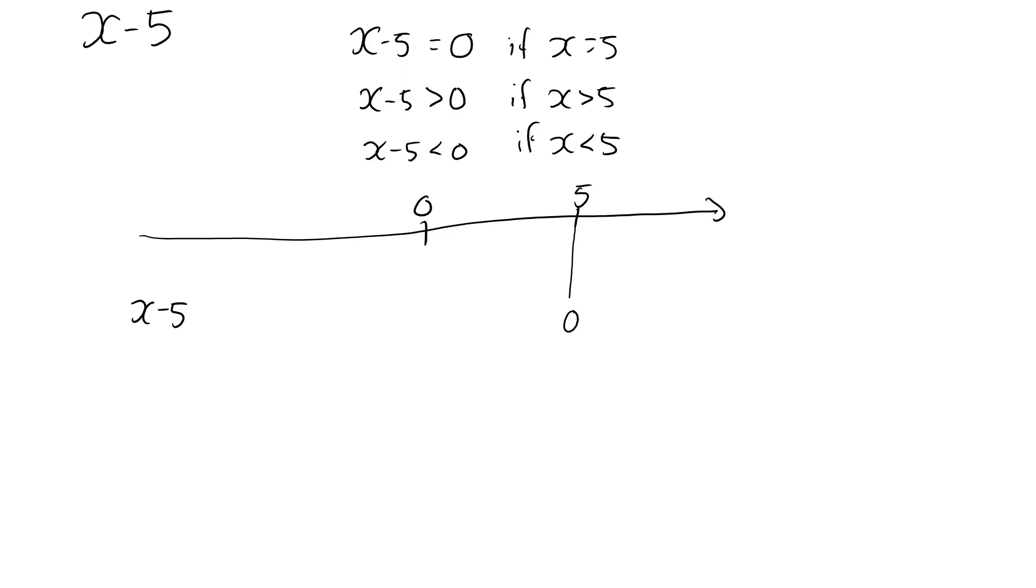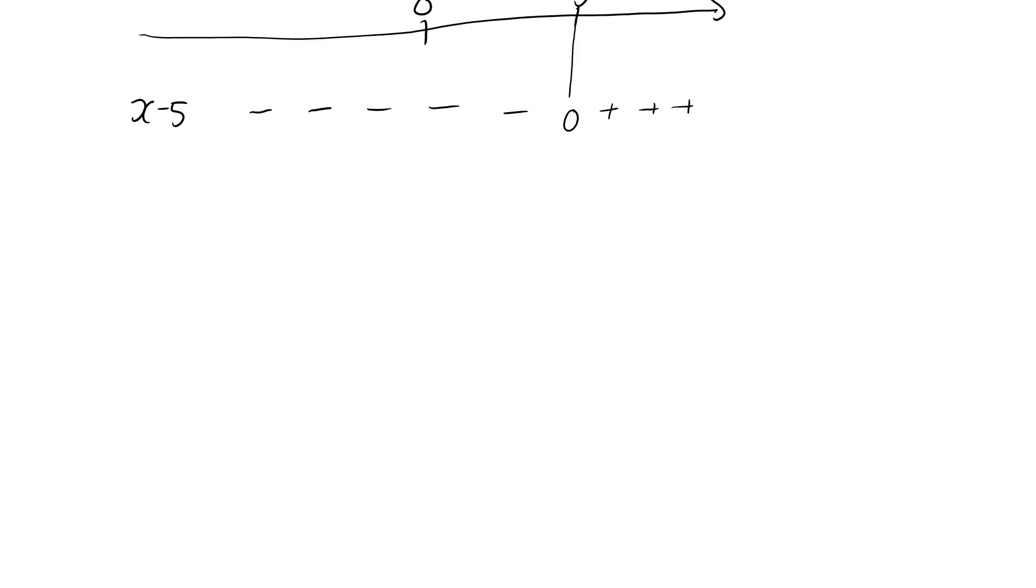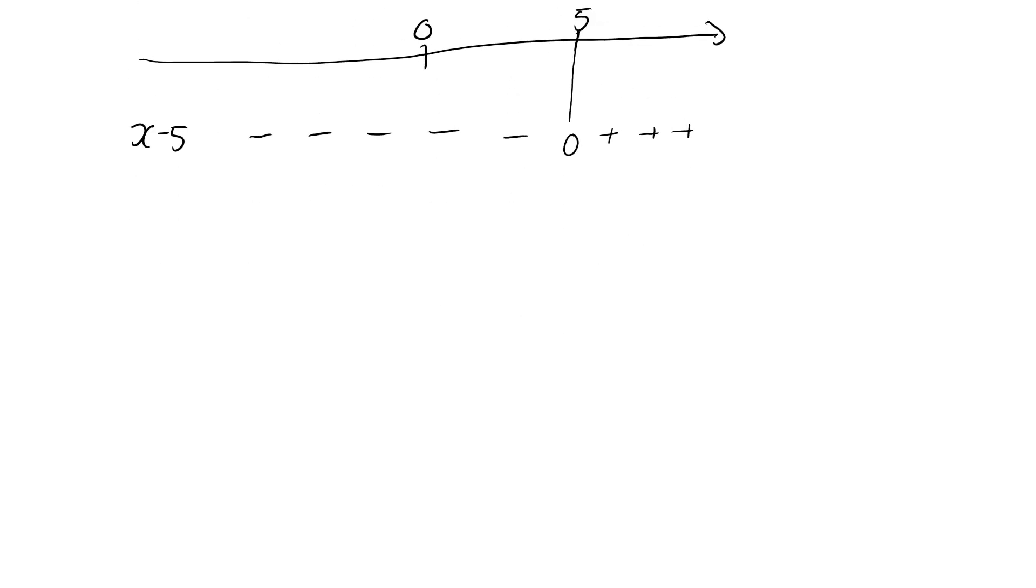Then we put minus signs here since the expression takes a negative value when x is less than 5. Finally, we put plus signs here as the expression is positive when x is greater than 5. This is a sign diagram for the expression x minus 5.